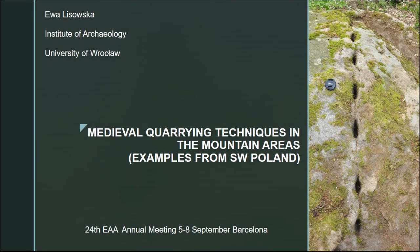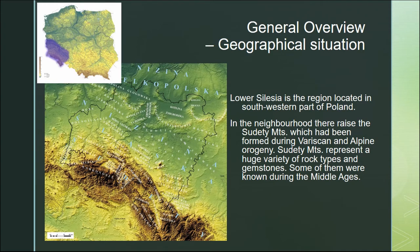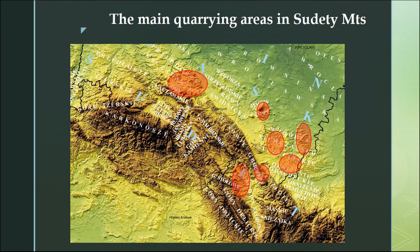Good afternoon. Today I would like to present some results of the study on quaryscapes in Lower Silesia, which in the southern part of this region we have Sudete mountains, which range from west to east. The Sudete mountains formed during Variscan orogeny and after that in the Alpine orogeny they broke into two pieces. This is quite important because the main quarrying activities in the Middle Ages concentrate in the first Sudete block, in the lower part of this mountain range.